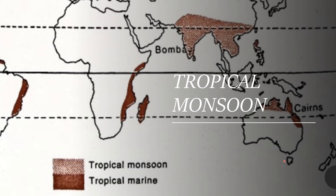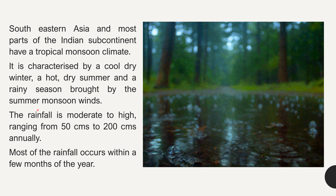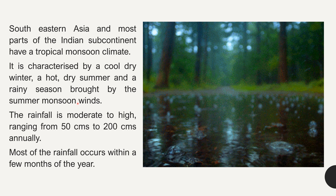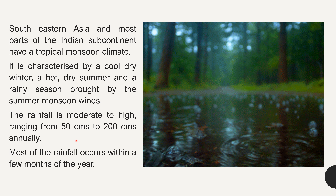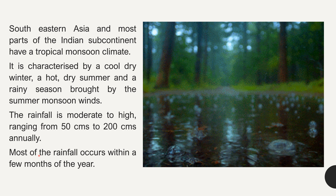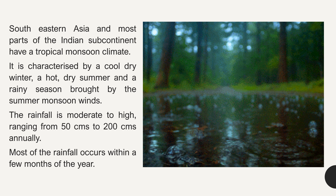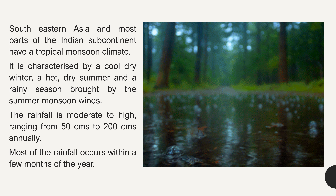Southeastern Asia and most parts of the Indian subcontinent have a tropical monsoon climate. This is characterized by a cool dry winter, a hot dry summer, and a rainy season which is brought by the summer monsoon winds. The rainfall here is moderate to high, ranging from 50 to 200 centimeters annually. Most of the rainfall occurs within a few months of the year, and it is mainly summer type — meaning the rain comes after the summer season.